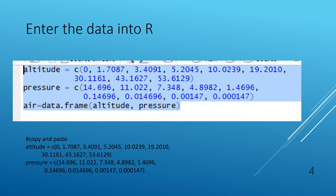Here we are using the little c, R's concatenate function, to construct a vector of altitudes, to construct another vector of pressures, and then to combine that altitude and pressure vector into a data frame we are calling 'air'.